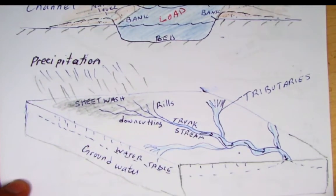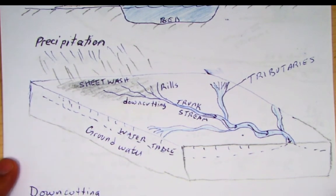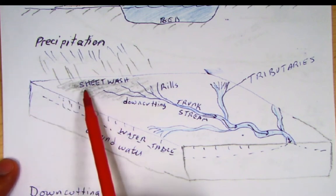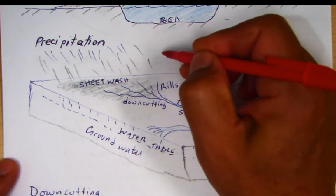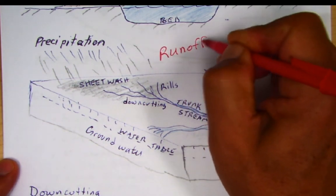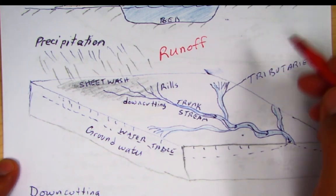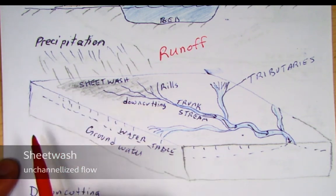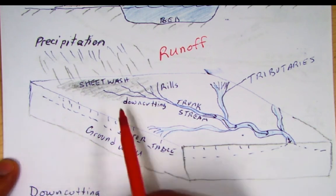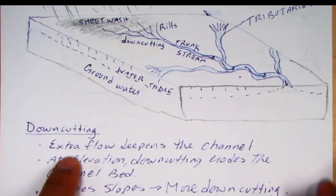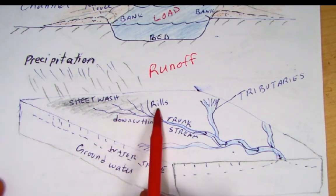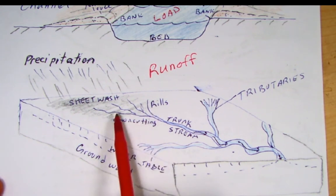Let's look at how stream flow begins. We have precipitation, primarily in the form of rain, but snow melt can also occur. We're looking at runoff, which is surface flow. The runoff usually starts off as sheet wash, where there's really no place for the water to go except moving horizontally along the ground surface. At some point when you get more water, extra flow deepens the channel, and you start making little small rivers called rills, which are the beginnings of channelized water.